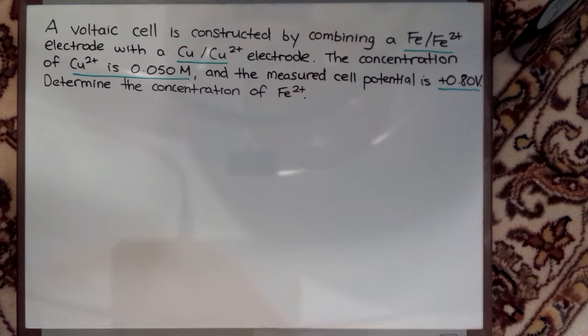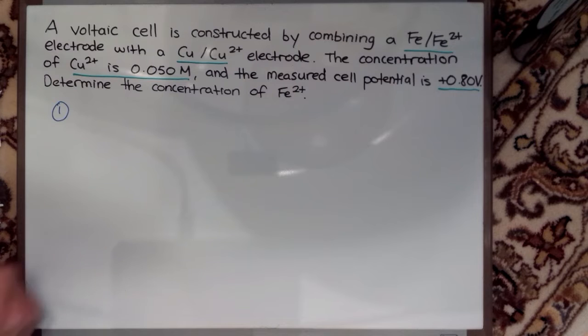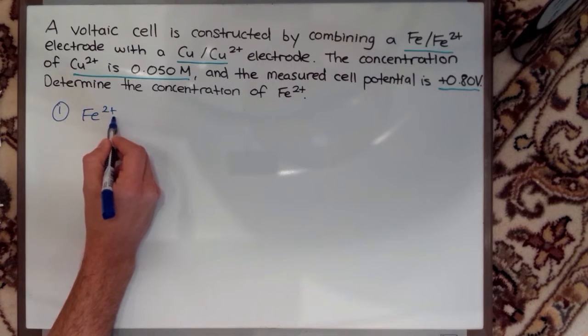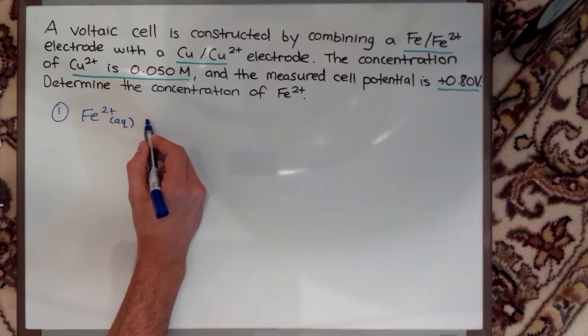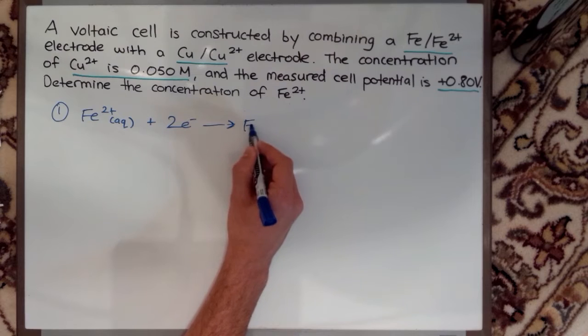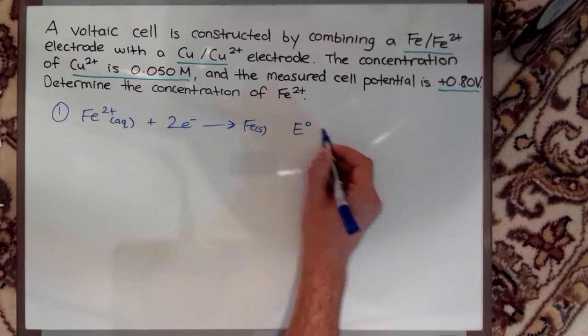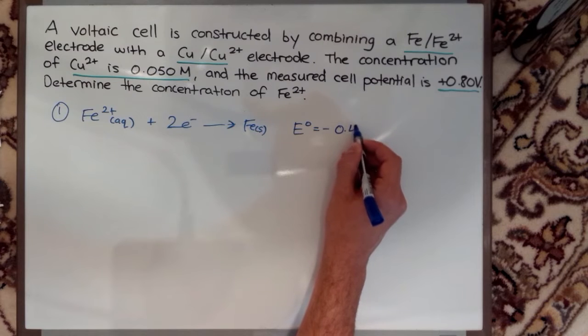Now if you go to a standard reduction potential table, you'll be given the reactions written as reductions for Fe2+ going to Fe and Cu2+ going to Cu. When I look up those reactions, I'll start with the Fe/Fe2+ reaction. I'll find it in the table and I'll have Fe2+ aqueous plus two electrons going to Fe solid, and my potential for that equation is negative 0.440 volts.